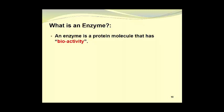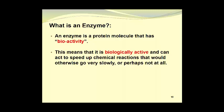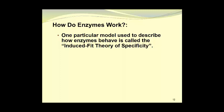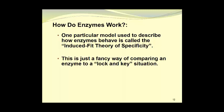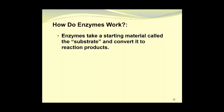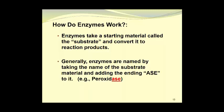So just what is an enzyme? An enzyme is a protein molecule that has bioactivity. This means that it is biologically active and can act to speed up chemical reactions that would otherwise go very slowly or perhaps not at all. As biological catalysts, they are specific, meaning that they promote only certain reactions and no others. One particular model used to describe how enzymes behave and function is called the induced fit theory of specificity. This is just a fancy way of comparing an enzyme to a lock and key situation. Enzymes have active sites which promote the desired reactions. Enzymes take a starting material called the substrate and convert it to reaction products. Generally, enzymes are named by taking the name of the substrate material and adding the ending ASE to it. As an example, the enzyme that acts on peroxide is called peroxidase.